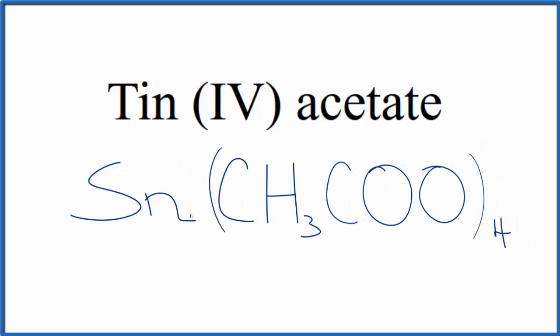That makes this the formula for tin(IV) acetate. We have 4 of these acetate ions here. Each one is 1 minus. That balances out the 4 plus on the tin.